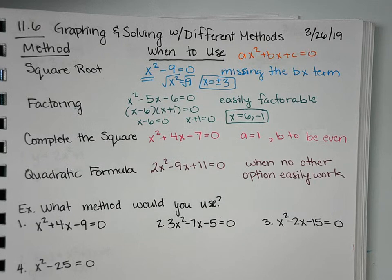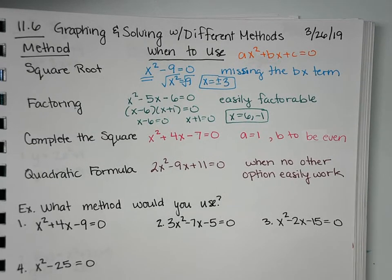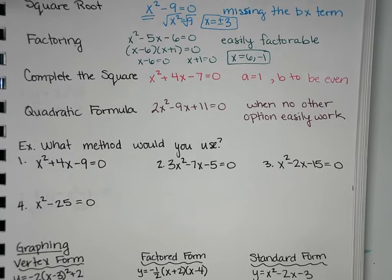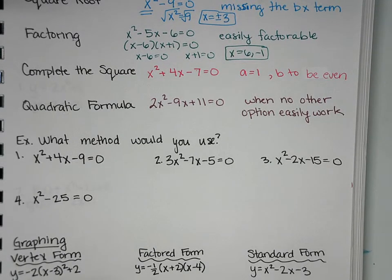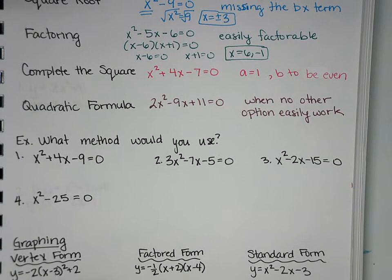So unless a problem specifically states a method, you're going to get to choose how you solve it. So there could be four different ways to solve it depending on what you choose. So what we're going to look at right now are just four where we're not going to solve them yet. We're just going to think about what method could we use to solve it. So look at the characteristics in each equation and see which one matches a method that you think would work. And you could have more than one method for each one of these. So what do you think about number one?